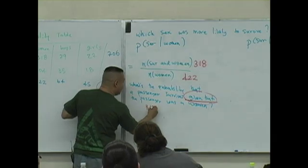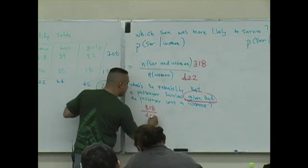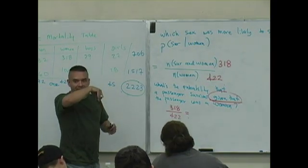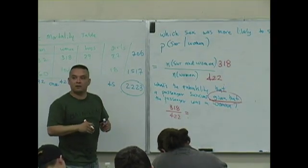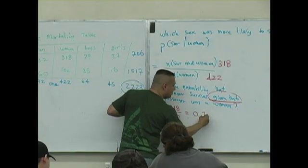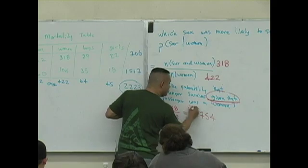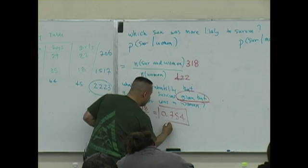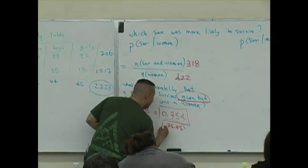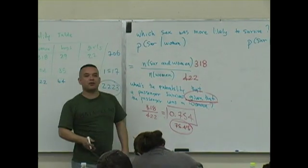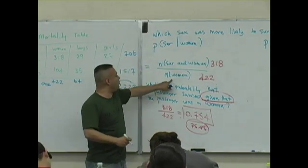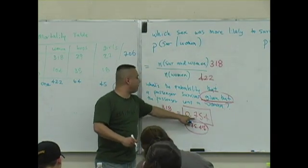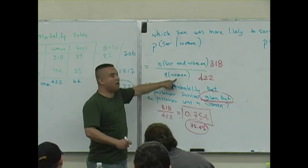What's 318 divided by 422? 0.754, rounded to the nearest thousandths. What that means is that 75.4 percent of - not the passengers - of who? The total is what? Women. 75.4 percent, or 0.754 as a probability, of the women survived.